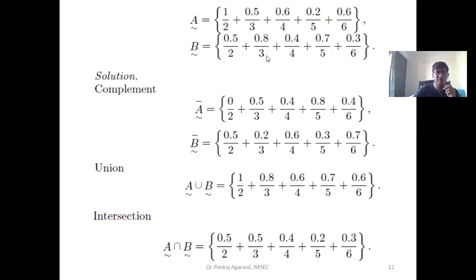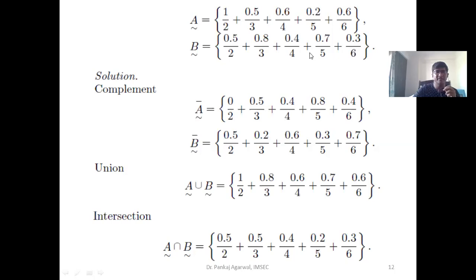The blue values are the elements as usual in the fuzzy set, and the values above represent the fuzzy values. This plus sign doesn't represent any summation — this is simply how fuzzy sets are represented.